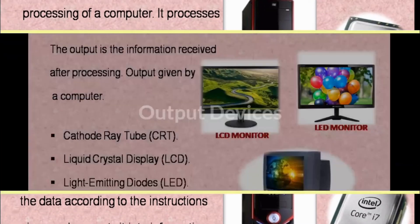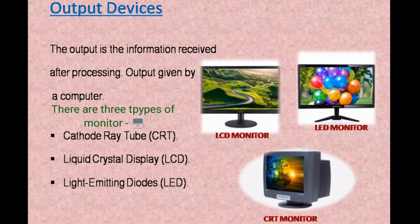The next topic is output devices. The output is the information received after processing. Output devices are used to see the output given by a computer. The first output device is the monitor — whatever work you do on a computer is displayed on the monitor. There are three types of monitors: CRT (cathode ray tube), LCD (liquid crystal display), and LED (light emitting diodes). Nowadays we mostly use LCD and LED monitors; earlier we used CRT monitors. The latest version is the LED monitor.